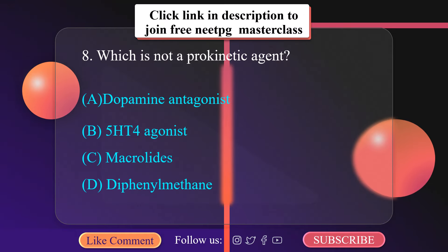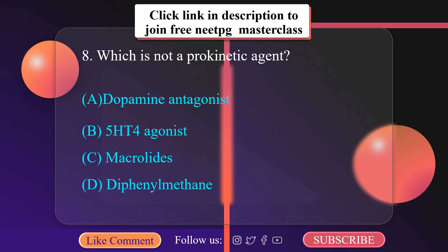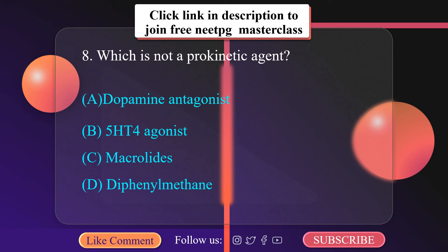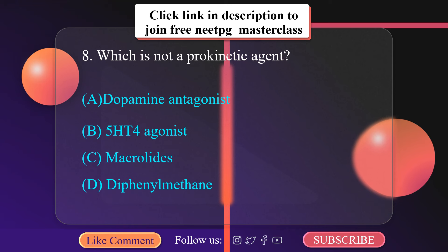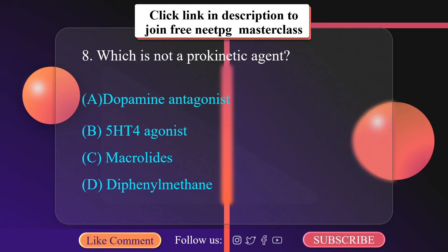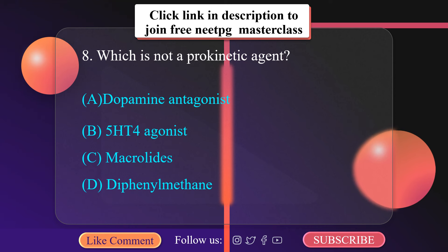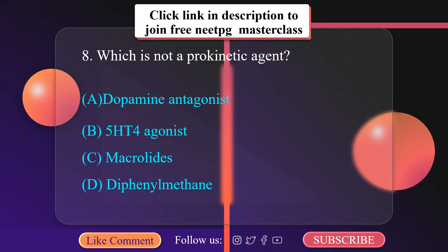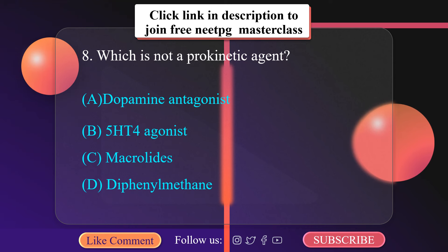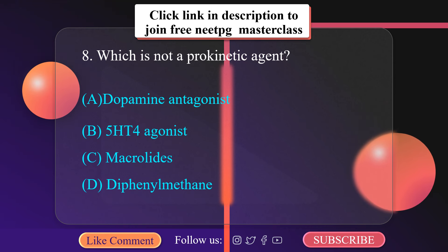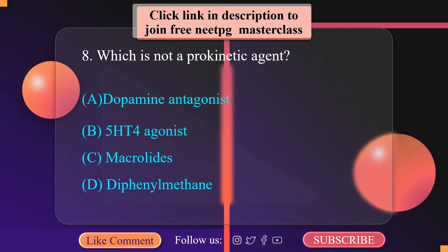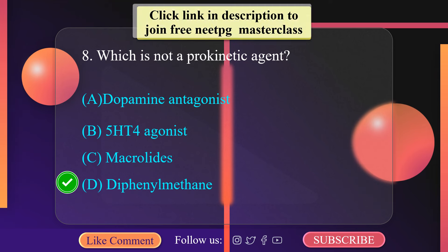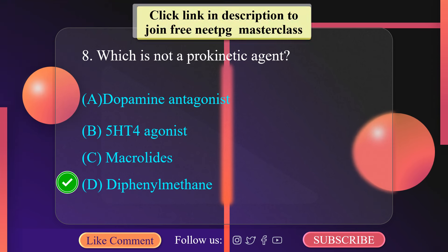Which is NOT a prokinetic agent? A. Dopamine antagonist, B. 5-HT4 agonist, C. Macrolide, D. Diphenylmethane. Prokinetic drugs are drugs that promote gastrointestinal transit and speed gastric emptying by enhancing coordinated propulsive motility. This excludes traditional cholinomimetics and anti-CNS drugs. The correct option is D — Diphenylmethane, which is not a prokinetic agent.